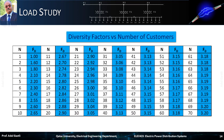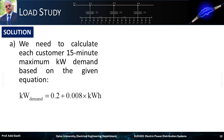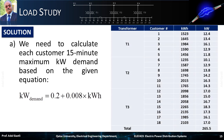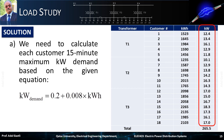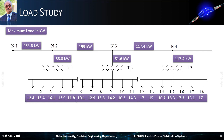This table provides the diversity factors versus the number of customers. To answer the first question, we need to calculate each customer's 15-minute maximum kilowatt demand based on the given equation. Thus the following table can be constructed. For instance, for customer 1 on transformer T1, the recorded energy consumption is 1523 kilowatt-hours, which according to the given equation gives a maximum demand of 12.4 kilowatts. Following the same procedure for all customers and using the given equation, the last column of the table can be easily constructed. To find the maximum demand on a transformer, we just sum the maximum demands of all consumers connected to the transformer. And for the feeders, we sum the maximum demands of the transformers fed by the feeder.